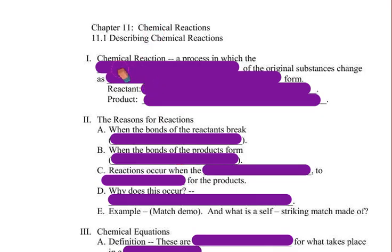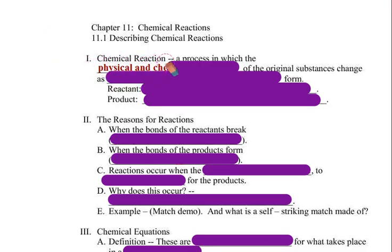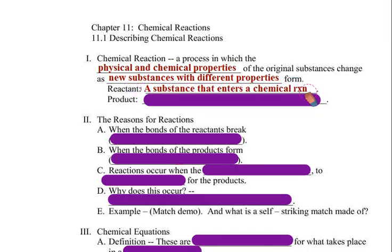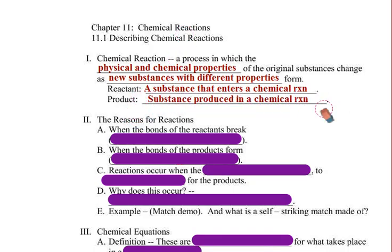First, we have Section 11.1, and it's describing chemical reactions. We need to define a chemical reaction. A chemical reaction is the process in which the physical and chemical properties of the original substances change as new substances with different properties form. There are two parts to a chemical reaction: the reactant side, which is the substance that enters a chemical reaction, and the product side, which is the substance produced in a chemical reaction.